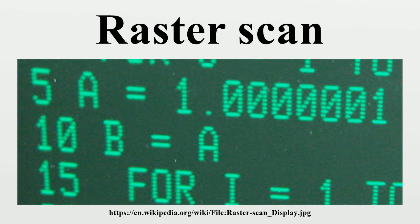The first use of raster specifically for a television scanning pattern is often credited to Baron Manfred von Ardenne, who wrote in 1933 referencing a lecture from January 1930. Raster was adopted into English television literature at least by 1936, in the title of an article in The Electrician. The mathematical theory of image scanning was developed in detail using Fourier transform techniques in a classic paper by Mertz and Gray of Bell Labs in 1934.